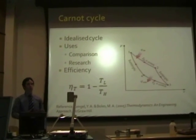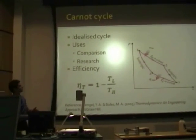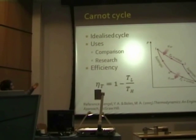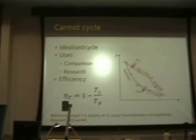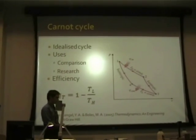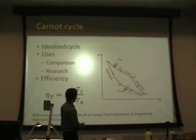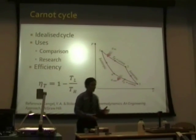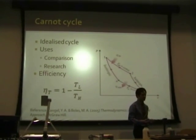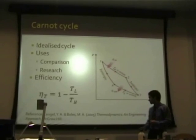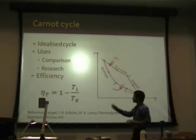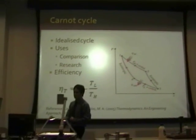You already covered thermodynamics last year. The basic heat cycle is the Carnot cycle — it's an idealized cycle with a lot of assumptions, so its uses are strictly for comparison research only. One thing it does establish is the Carnot efficiency, which is one minus the ratio between the low temperature and the high temperature.